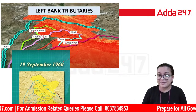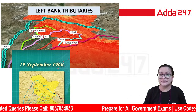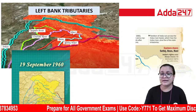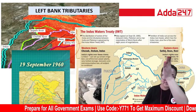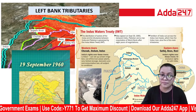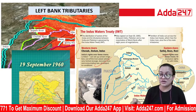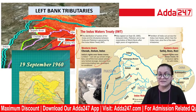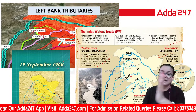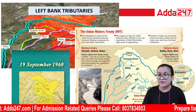The Indus Water Treaty is important. India and Pakistan have both been very concerned about sharing the Indus river. The treaty was signed in September 1960 by the Prime Ministers of India and Pakistan. Under this treaty, the rivers are divided: the western rivers were allocated to Pakistan and the eastern rivers to India. This was negotiated after the partition of India.